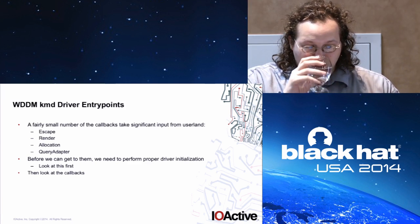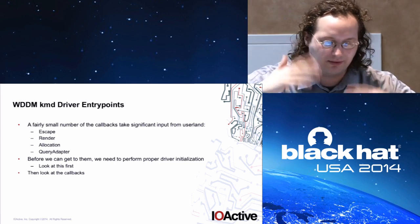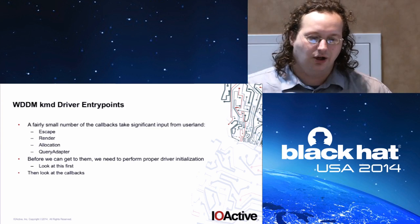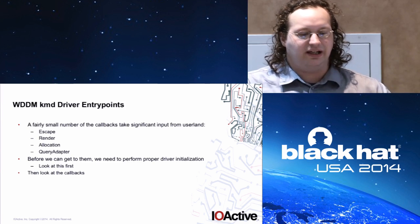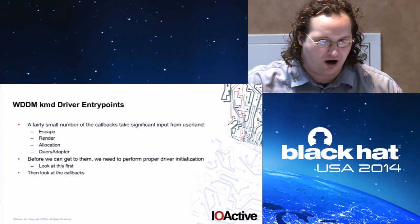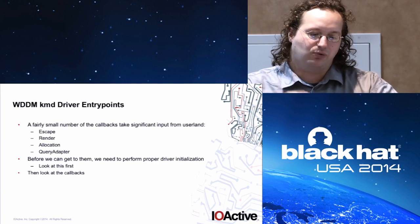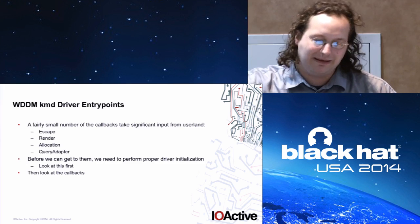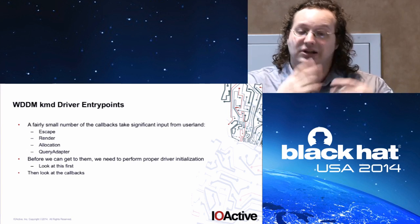The entry points are fairly well documented on MSDN, but I've narrowed it down to a small list where the bugs will actually be. There are essentially four callbacks: escape, render, allocation info, and query adapter. Escape is basically the graphics driver equivalent of IOCTL. Render happens when you want to render from a command buffer. Allocation is for getting DMA buffers allocated. And query adapter is where you go to a graphics card and say, give me this kind of information.